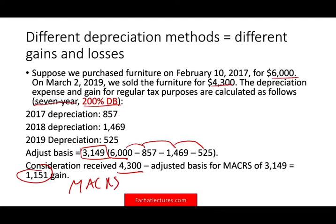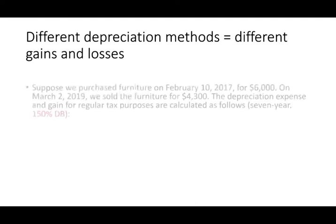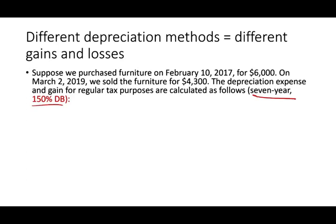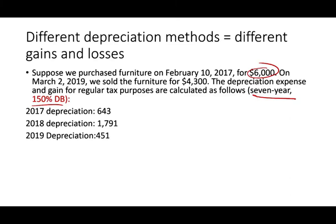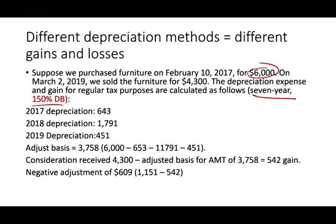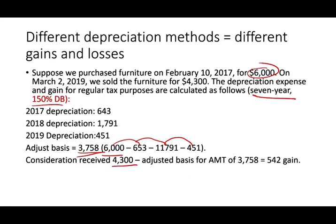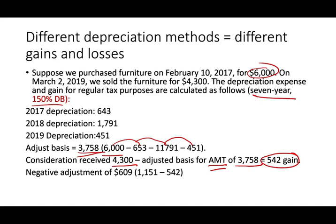Now we do the same for AMT using the seven-year 150% declining balance. Year 1: $643; Year 2: $1,791; Year 3: $451. The AMT basis is $3,758. Gain under AMT: $4,300 − $3,758 = $542. The MACRS gain of $1,151 is greater than the AMT gain of $542. This gives us another negative adjustment of $609. Why? Because we took less depreciation early on under AMT, we have less gain, resulting in a negative adjustment.